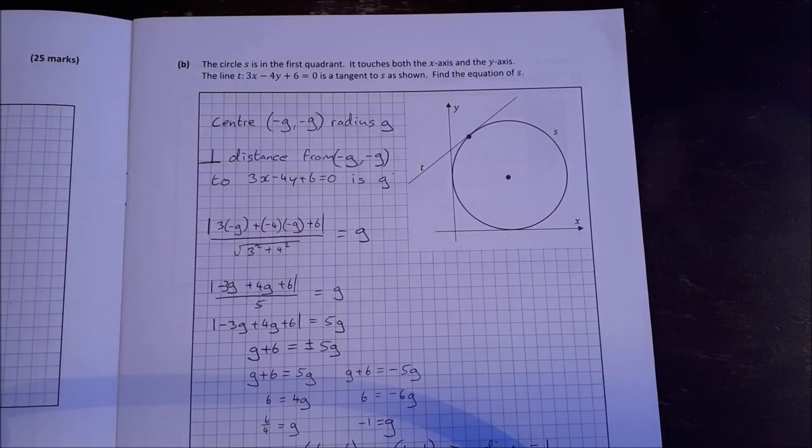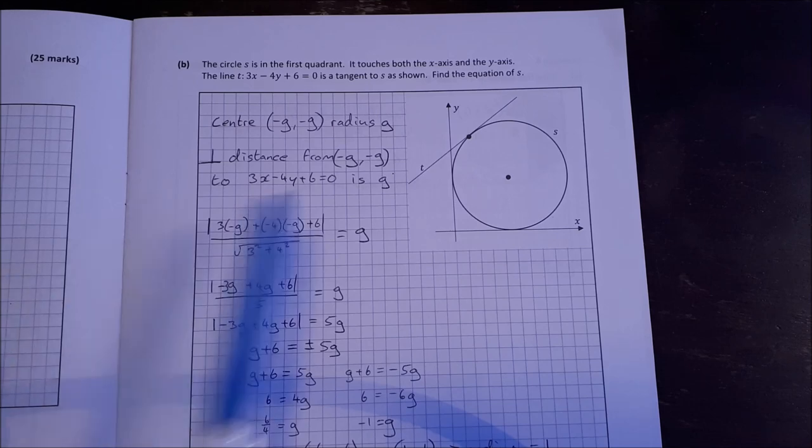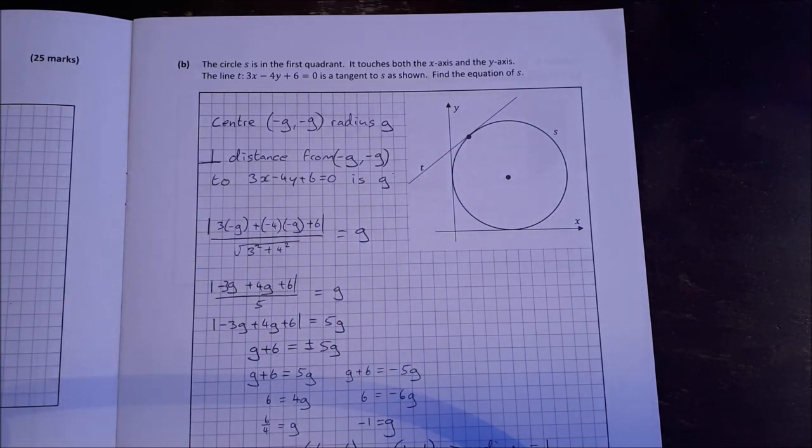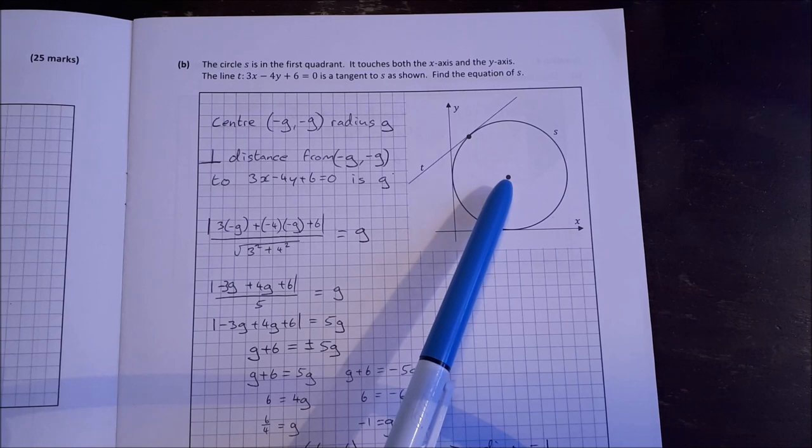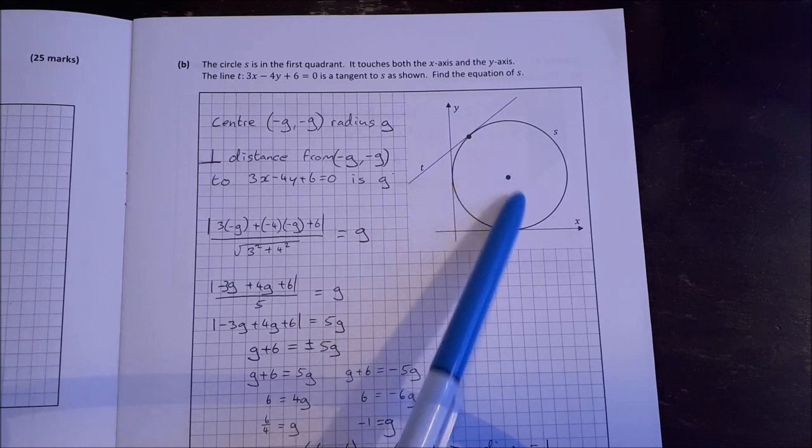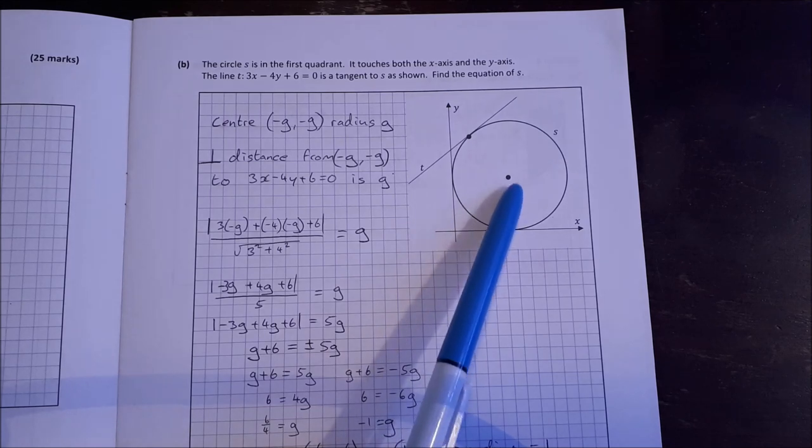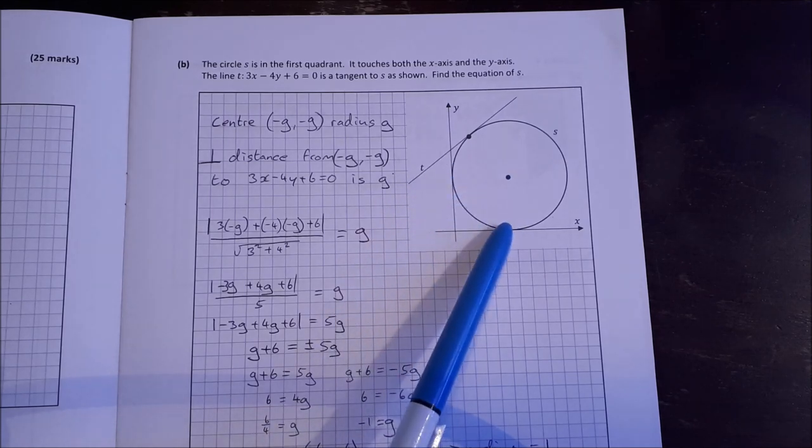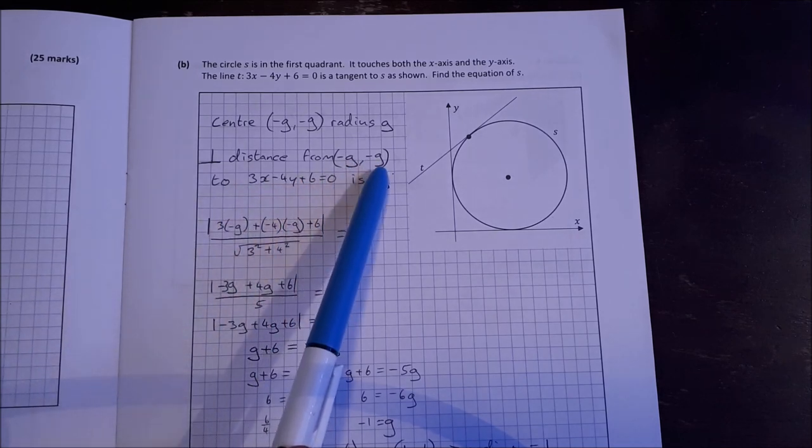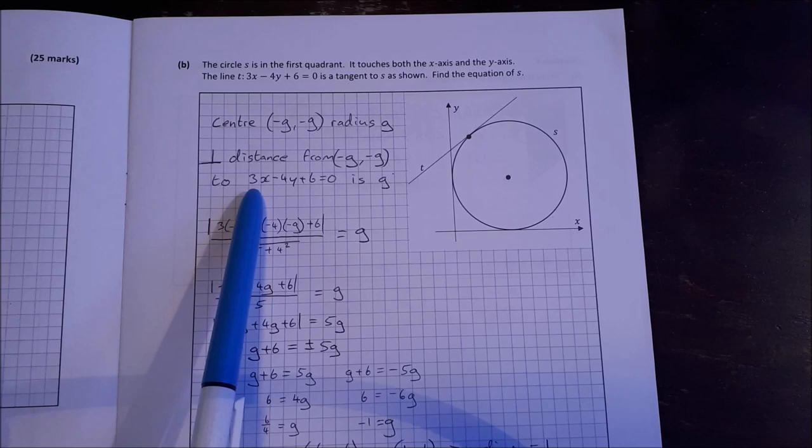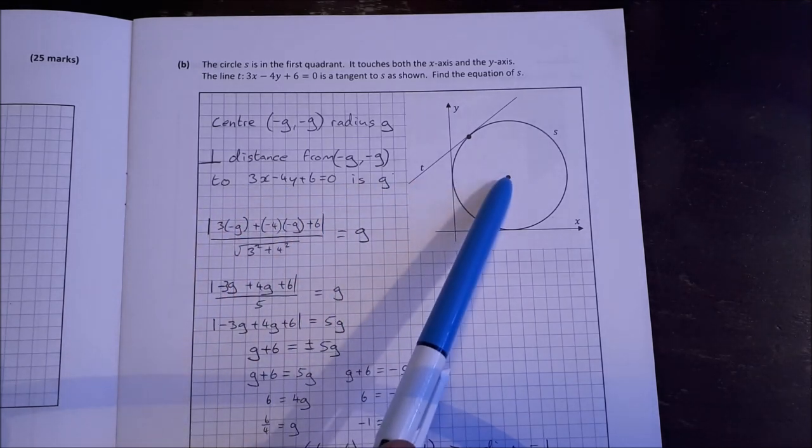Part B. The circle S is in the first quadrant. It touches both the x-axis and the y-axis. The line T, which is 3x minus 4y plus 6 equal to 0 is a tangent as shown. Find the equation of S. So the centre is minus G minus G. We know that it's the same because the radius and it's a tangent to both the y-axis and the x-axis. So we go up and across the same distance. So it's minus G minus G and the radius is going to be G. The perpendicular distance from minus G minus G to the tangent is the radius. So that's G.